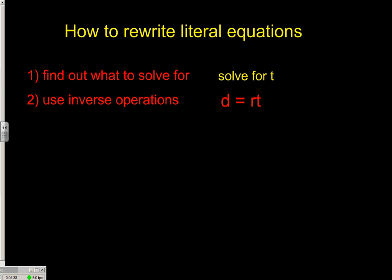Here's a formula that's used a lot: distance equals rate times time. You'll see it in science class a lot. We want to get the t all by itself, so let's get that r away from it. r is multiplying t, so we'll divide by r on both sides. And we have distance divided by rate equals time.